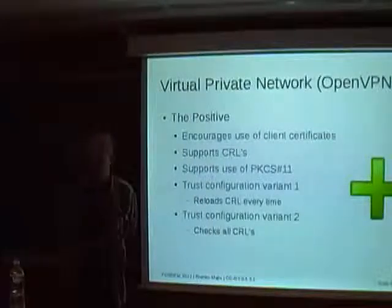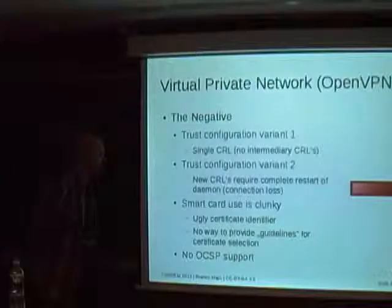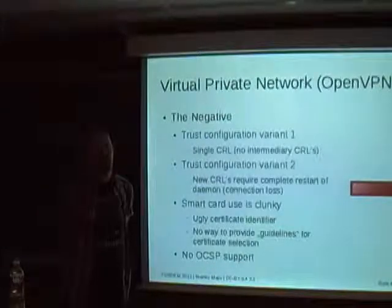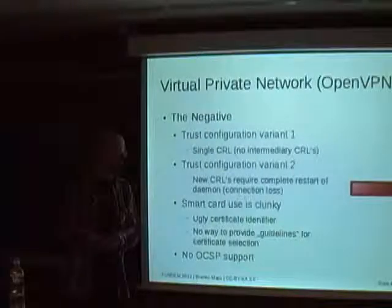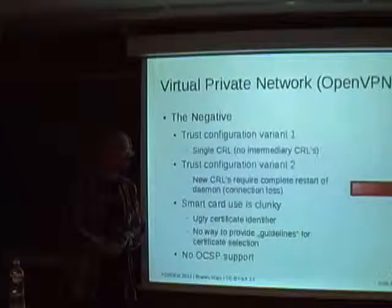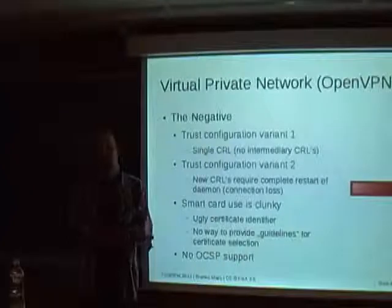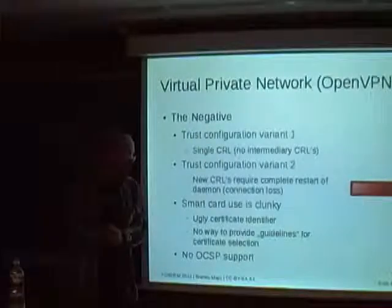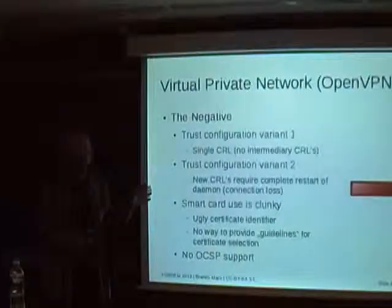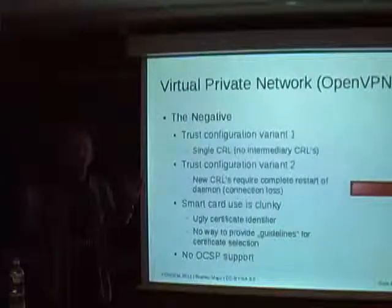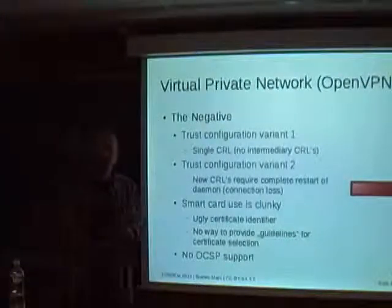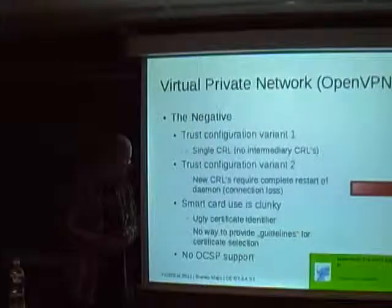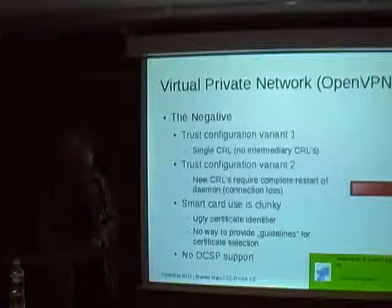The problems with OpenVPN: Configuration Variant 1 allows only a single CRL. Configuration Variant 2 is more problematic — with an OpenSSL-style hashed directory, you need to restart the entire OpenVPN server to reload CRLs, which cuts connections to all connected clients. Use of smart cards is also somewhat poorly implemented — you provide a certificate serial ID, which is a very ugly identifier, and you can't simply tell it to use the first slot containing a certificate with digital signature key usage. And of course, no OCSP support.